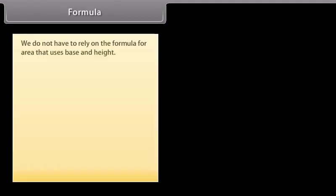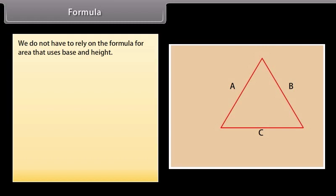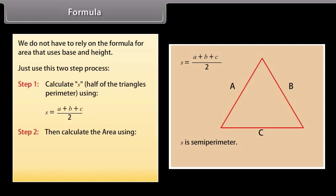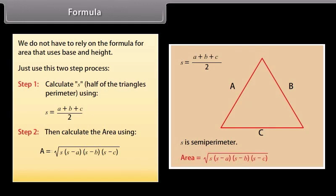We do not have to rely on the formula for area that uses base and height. The figure illustrates the general formula where S represents the semi-perimeter of the triangle. We just have to use a two-step process. Step 1: Calculate S, half of the triangle's perimeter, using S = (A + B + C) / 2. Step 2: Calculate the area using A = √(S(S−A)(S−B)(S−C)), where A, B and C are the sides of the triangle.